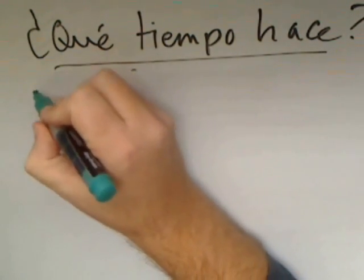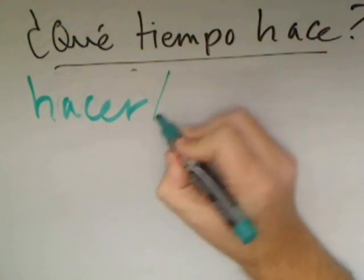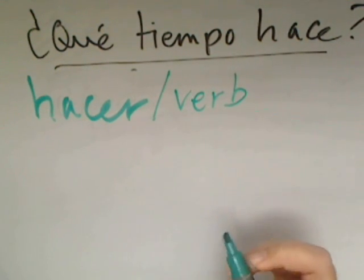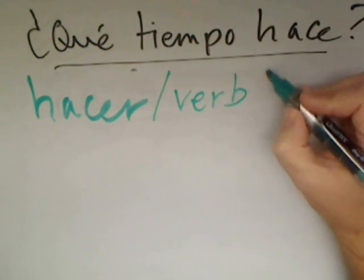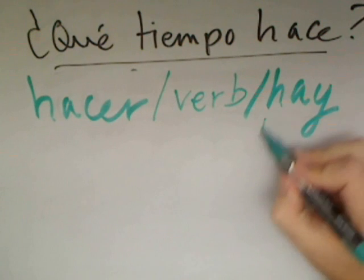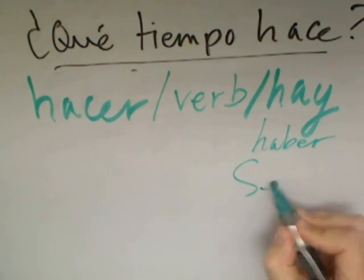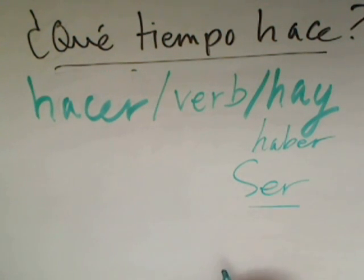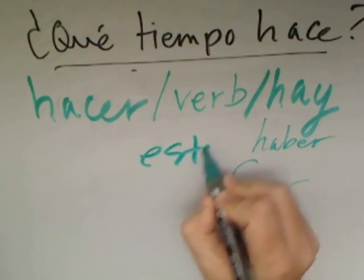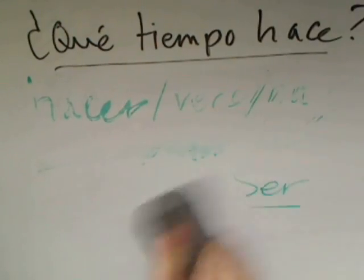I say 'relatively' because we're going to look at four or five different formulas for responding. The most common involves using the verb hacer. Another option is to respond with a verb — the verbs we can use here are not limited. Another possibility is to respond with the form hay, which is a form of the verb haber. Yet another option is to use expressions with the verb ser, to be, and also estar. So basically five different formulas for responding to questions about the weather and climate.